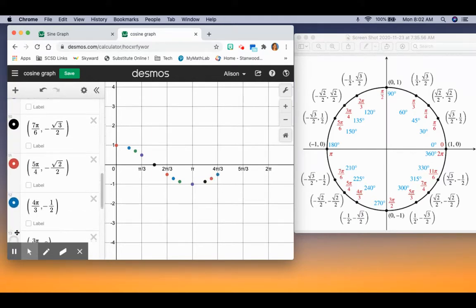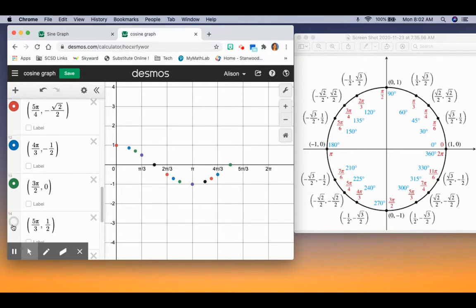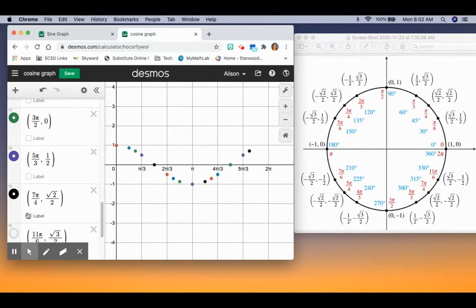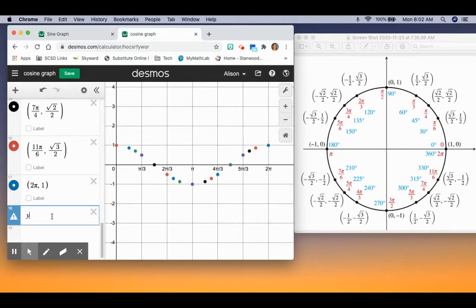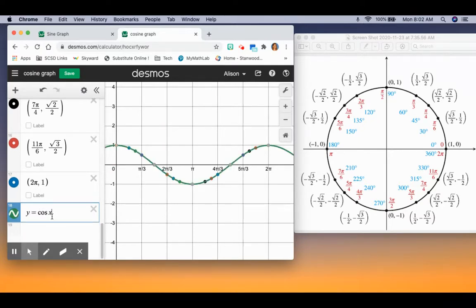You'll notice this curve looks similar to the sine graph, but it's shifted. We'll talk about that later. This forms the cosine graph. If I type in y = cos(x), it fits the points I just graphed. Again, it's a periodic function that continues because we can keep continuing around the unit circle.